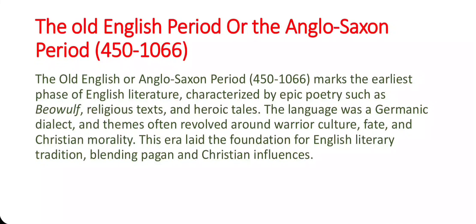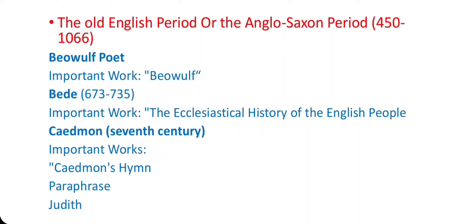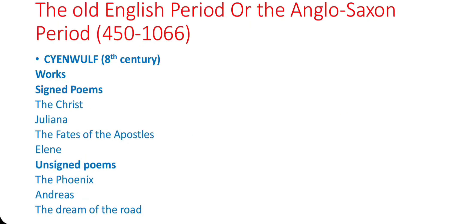Now let's see important poets and their works from this period. First is the Beowulf Poet — important work: Beowulf. Next is Bede — important work: The Ecclesiastical History of the English People. Next is Caedmon — important works: Caedmon's Hymn, Paraphrase, and Judith. Next is Cynewulf, 8th century — works include The Christ, Juliana, The Fates of the Apostles, Elena, unsigned poems, The Phoenix, Andreas, and The Dream of the Rood.